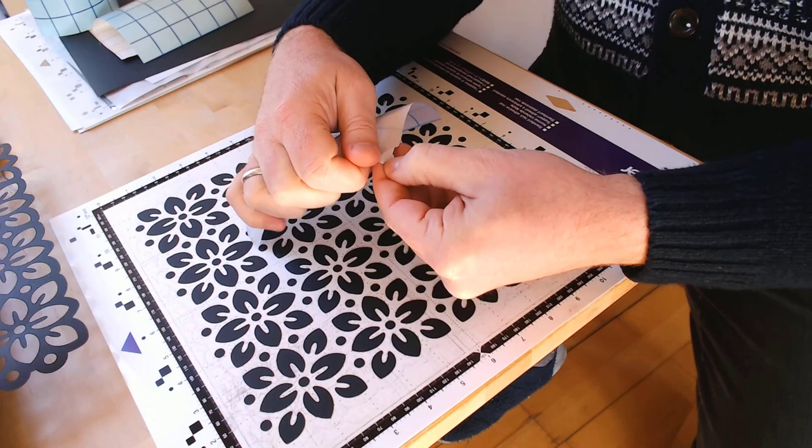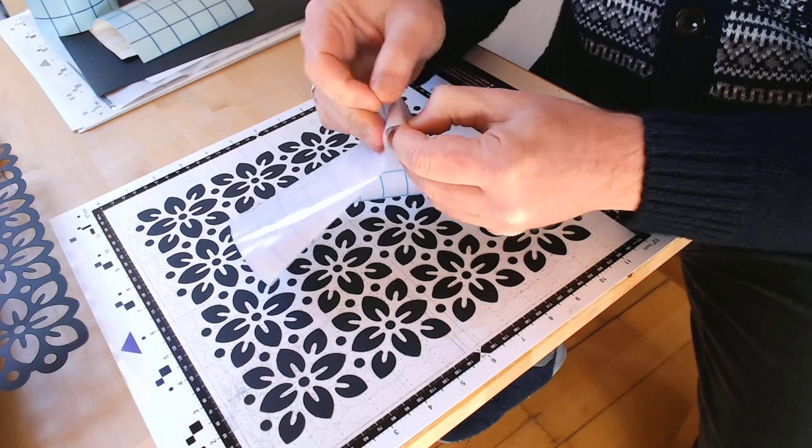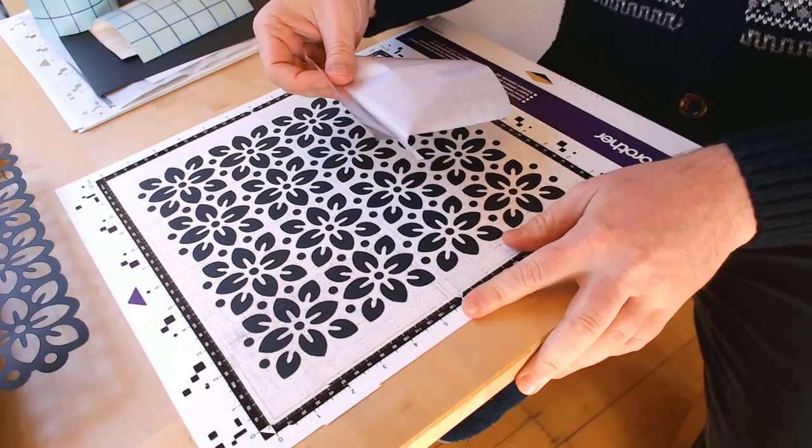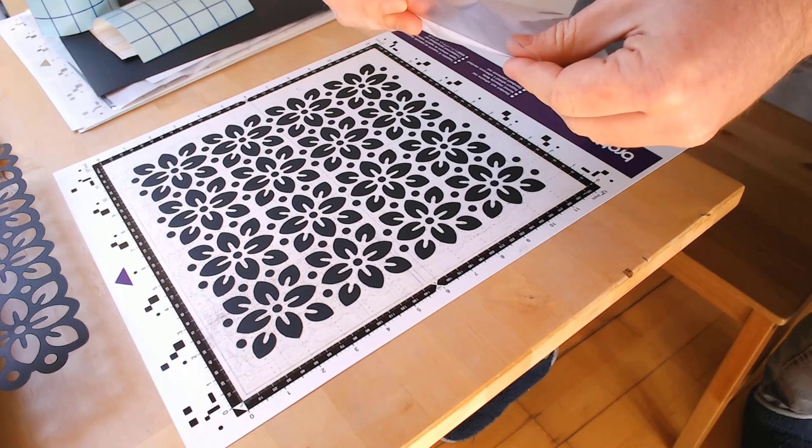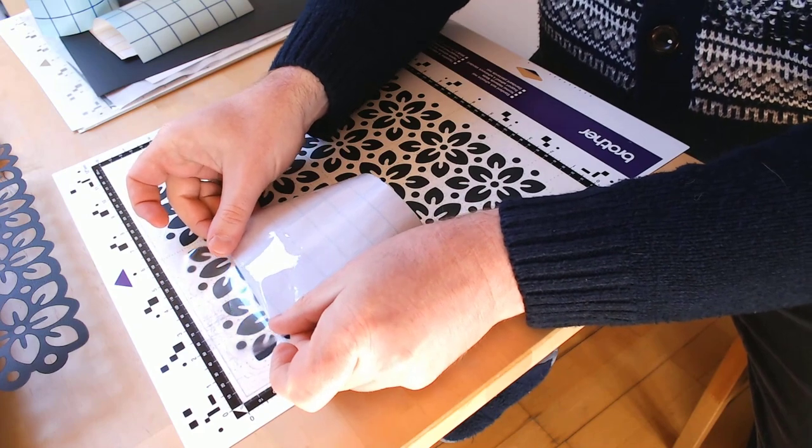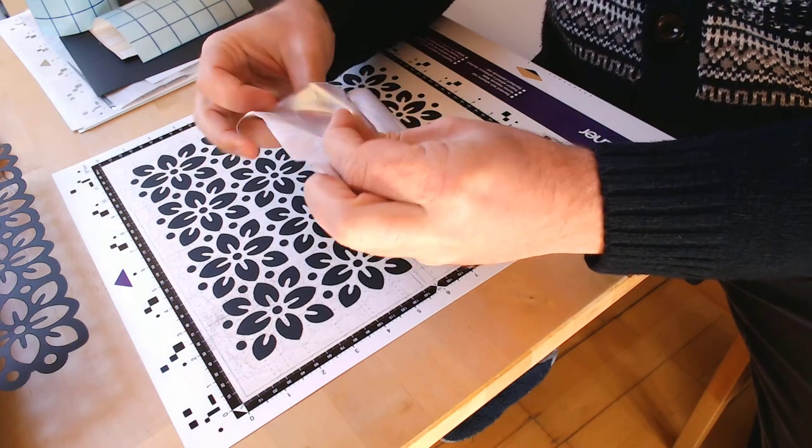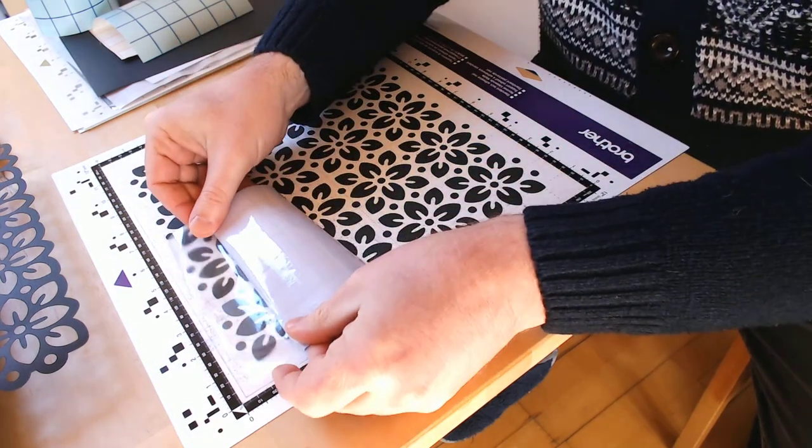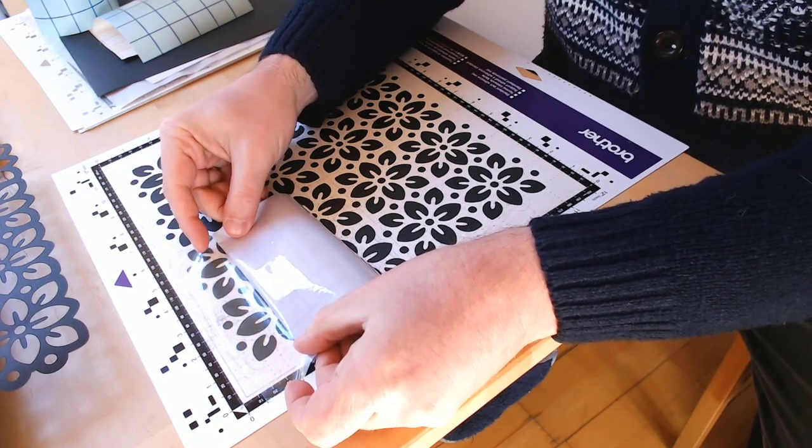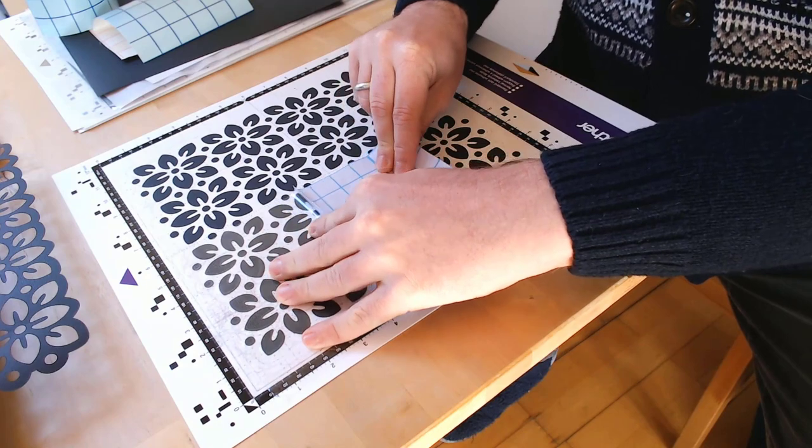What I would do though is only reveal part of that sheet, and you'll see why in a second, otherwise it can get a bit of a mess because you can transfer quite a bit at once. So as you can see there's just a bit that I've revealed. So these are all basically low adhesive repositionable tapes essentially. So what I do is I basically position that over the design that I want to transfer and press that first portion down, and then pull back the carrier sheet as I push down the rest.